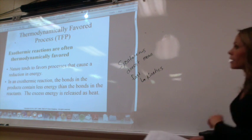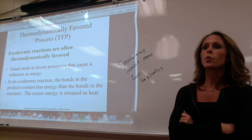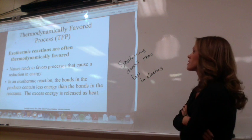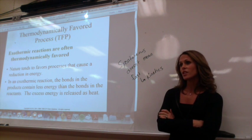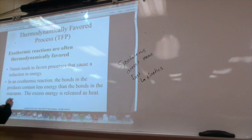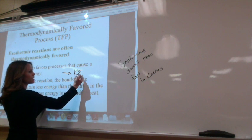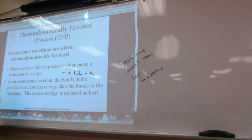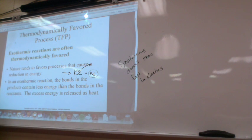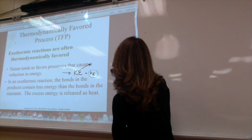Exothermic reactions are often thermodynamically favored. When you have an exothermic reaction, you are releasing heat into your surroundings. Nature tends to favor processes that cause a reduction in energy — in an exothermic process, the products have low potential energy and high kinetic energy is released as heat. The bonds in the products contain less energy than the bonds in the reactants, and the excess energy is released as heat. So a negative delta H is thermodynamically favored.